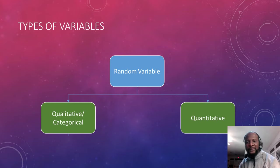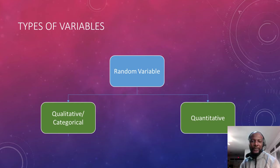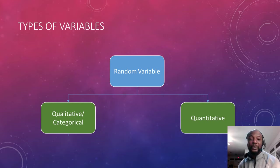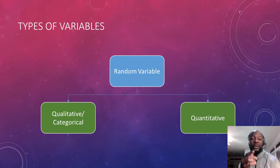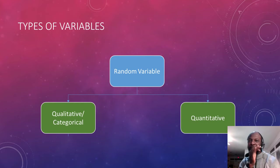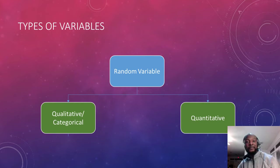There are different types of variables. Variables can be divided into two different types: categorical or qualitative variables, and quantitative variables. This should not be confused with the types of research or the types of data, because you can also have qualitative or quantitative research and data. But here we are talking about variables — variables can either be quantitative or qualitative.